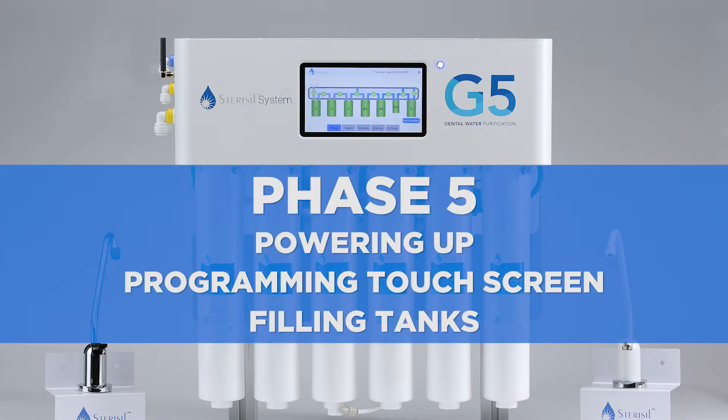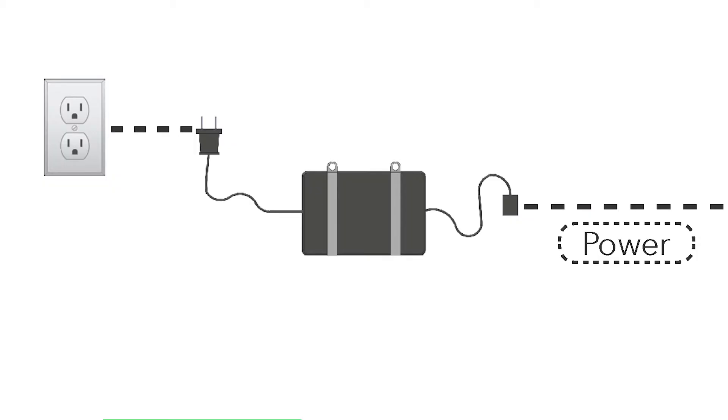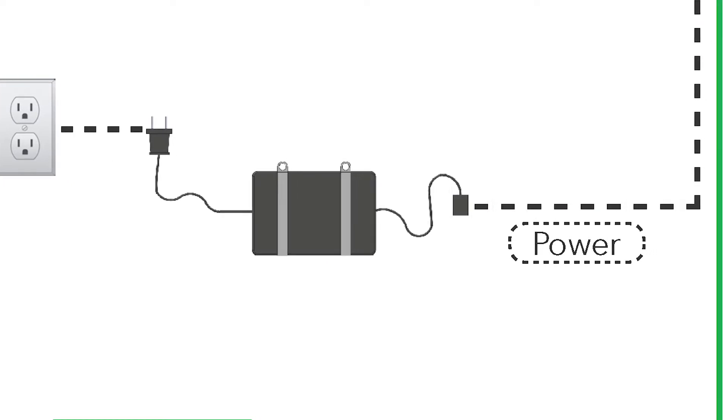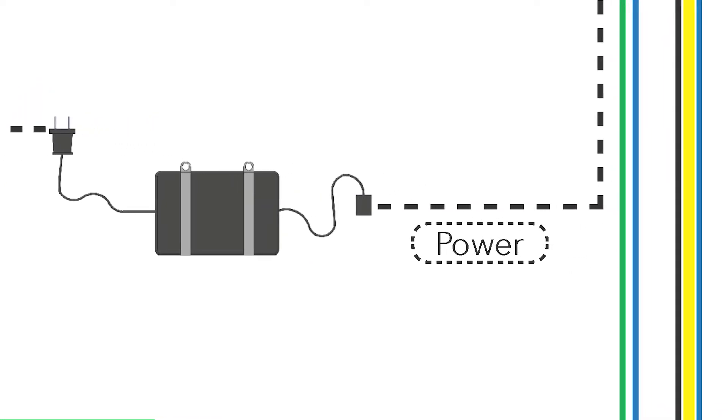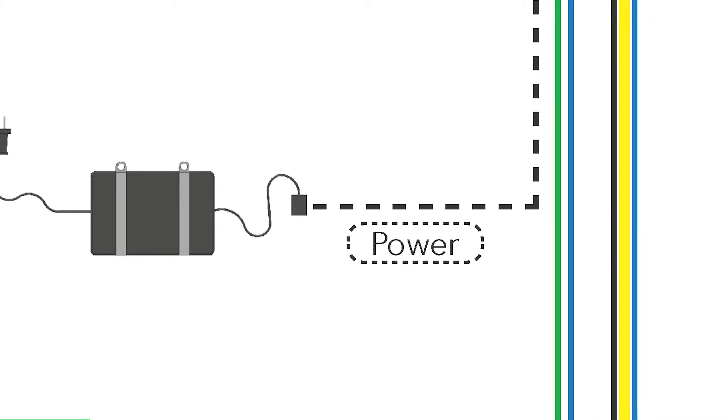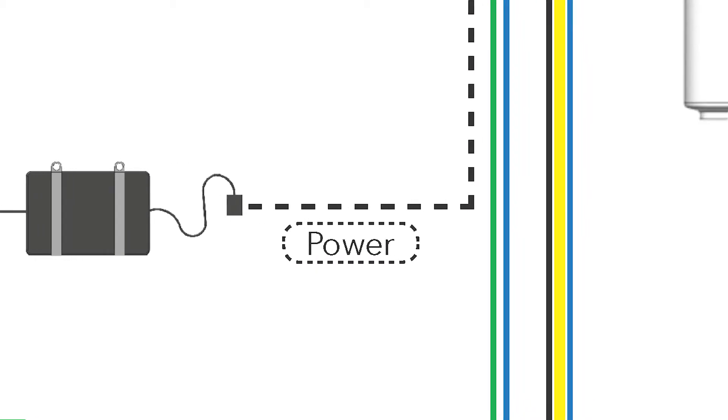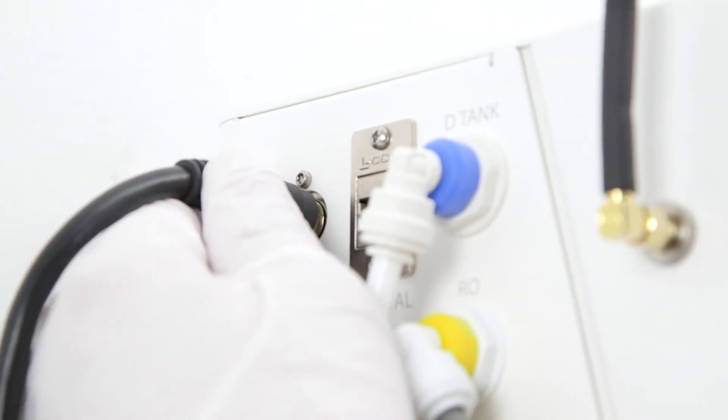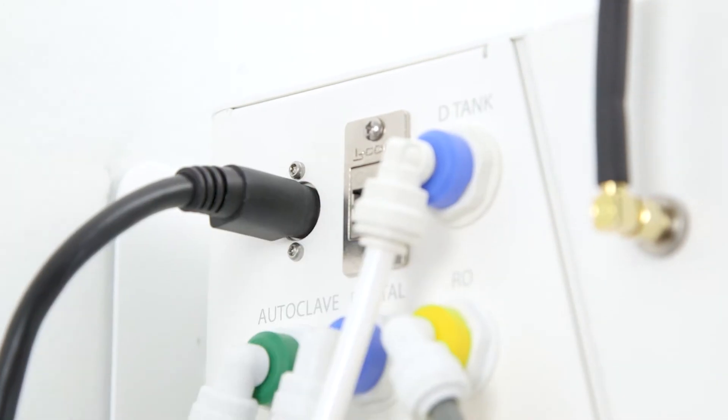Phase 5, powering up, programming the touch screen, and filling. Powering up the system. Power adapter. Select a location within six feet of the outlet and ensure the power cord can reach both the outlet and the system without tension on the cable. When you plug the unit in, the touch screen will power on and you'll be brought to the home screen.